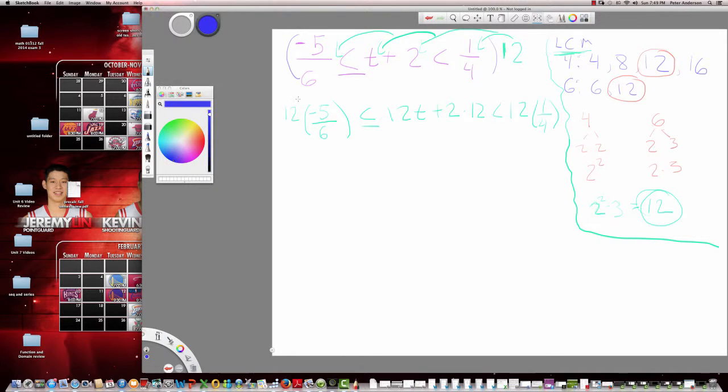So why do we go through and do this? Well, 12, which is 12/1, 12 divided by 1 is 12, 6 goes into 12 two times. So this will cancel, this will be 2, this will go away. All right, so I'm left with 2 times -5, which is -10, which is less than or equal to 12t plus, now I'm going to do 2 times 12, which is 24, is less than, and again, these two will cancel out and this will become 3.